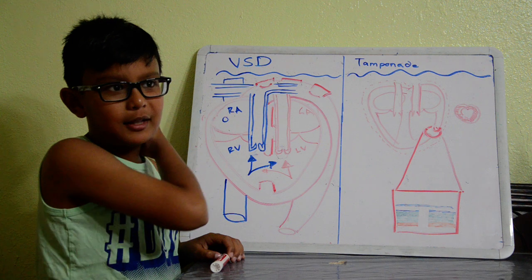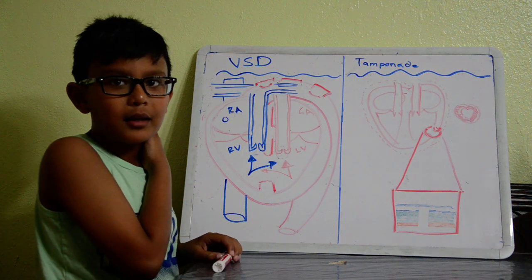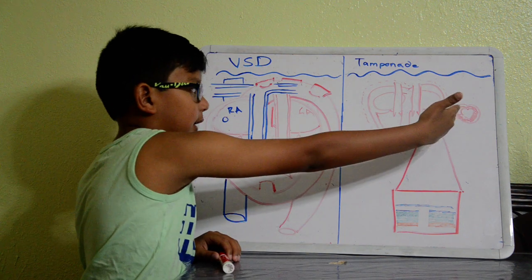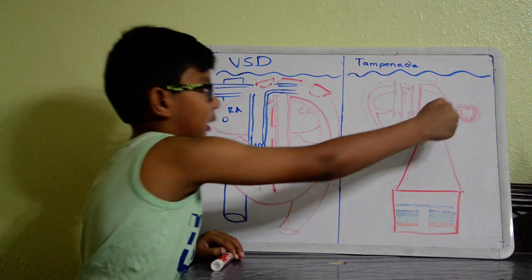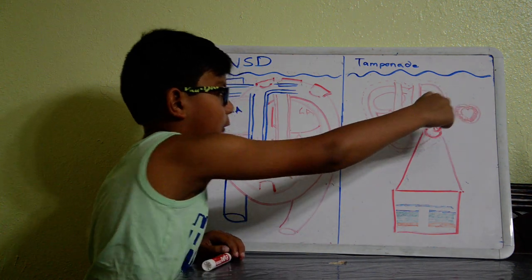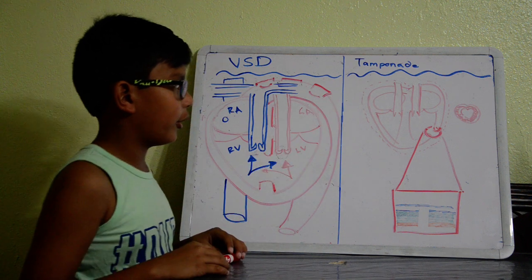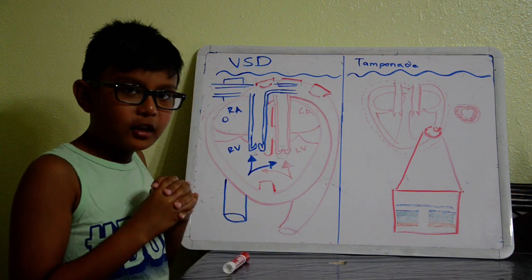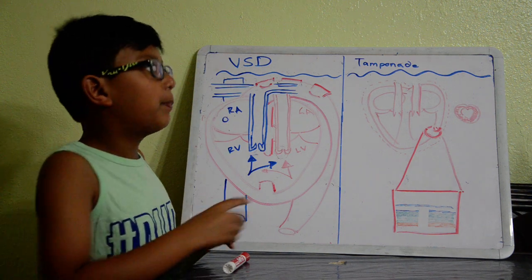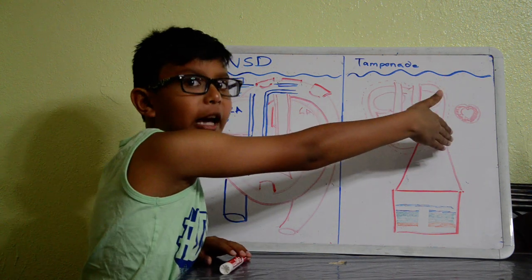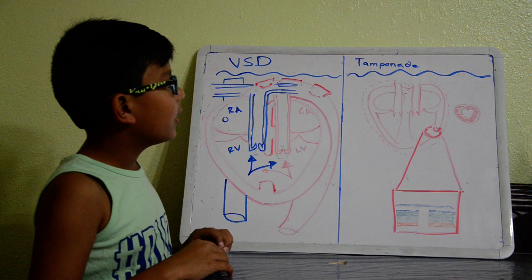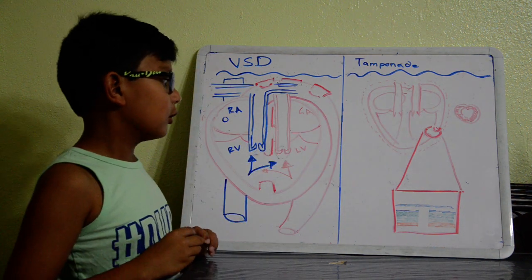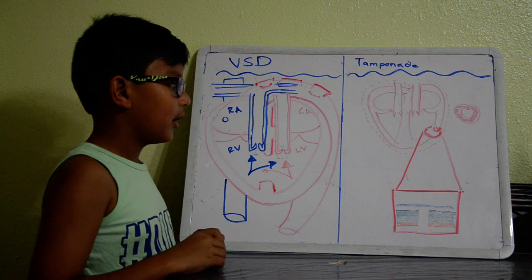Next we have tamponade. Tamponade has a possibility of being life-threatening. Tamponade is a disease where — let's say this is our heart, a good old Valentine's Day heart — the pericardium sac around that heart is basically filled with blood, maybe caused by a hole.